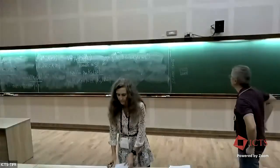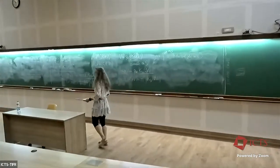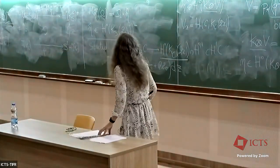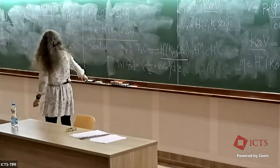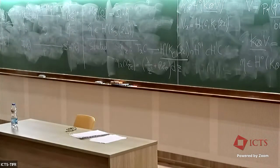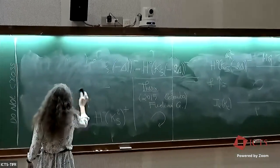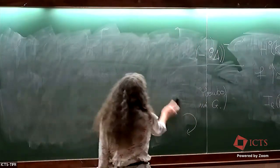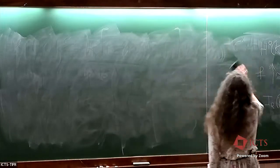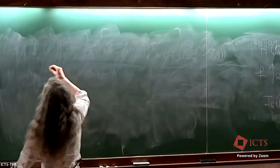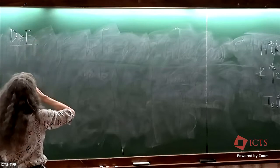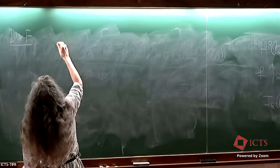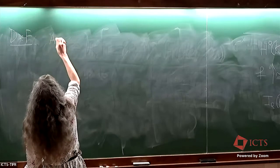Thank you very much for the invitation. There is a change: I will continue on talking about the second fundamental form. Yesterday, Alessandro introduced the notion of totally geodesic submanifolds of a Riemannian manifold. Let me first start by giving a definition: consider a totally geodesic variety of the moduli space of principally polarized abelian varieties, A_g.